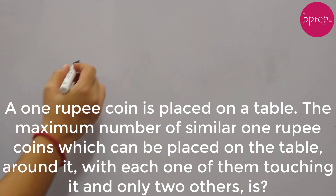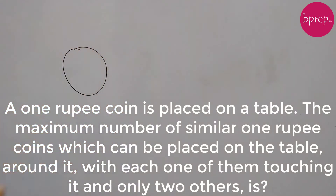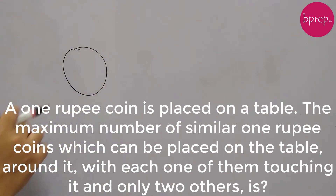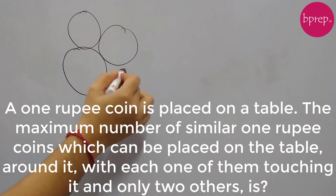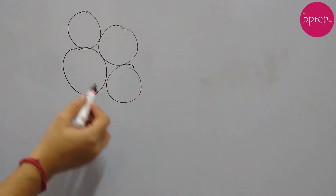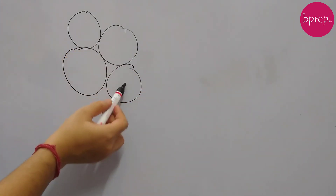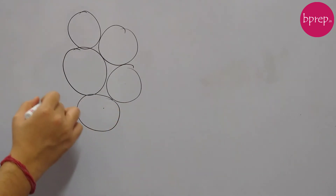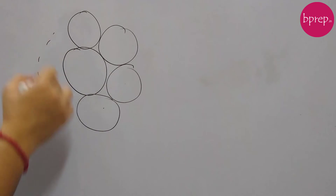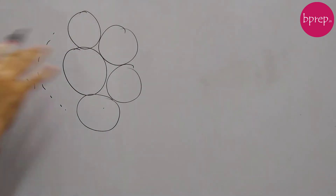So we have a 1 rupee coin — let's say this is the coin — and now we are trying to place similar coins around this coin. So let's say this is the other coin, this is the other coin, this is one more, so that every coin is touching 2 adjacent coins and the center one. We are placing all the coins this way. Let's say there are n coins; we need to find out how many coins can be placed.